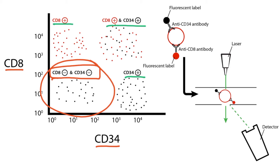You can imagine that the ability to measure cell markers like this has many applications. However, it's very commonly used in hematology. For example, it can be useful in diagnosing lymphomas, leukemias, and immunodeficiencies.